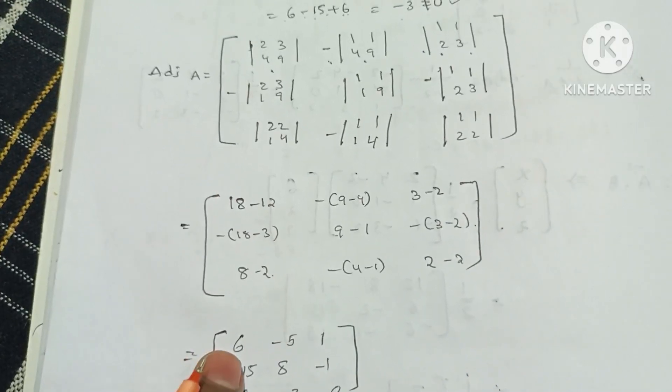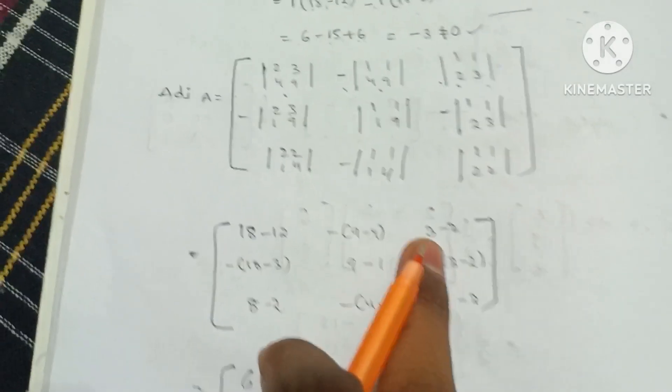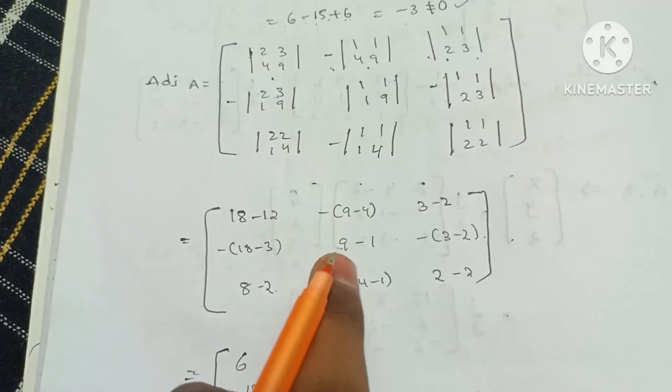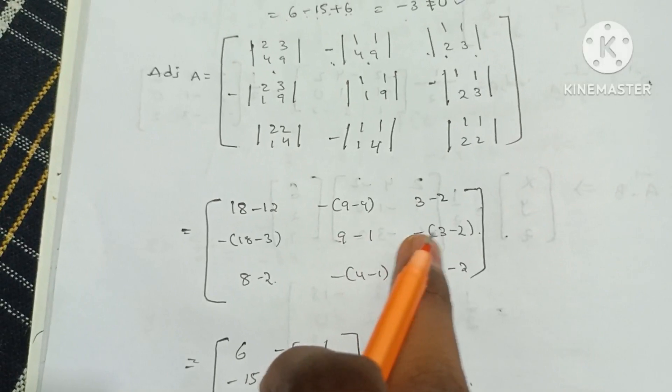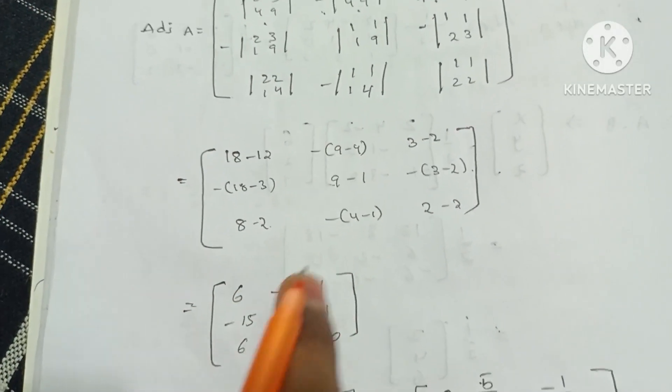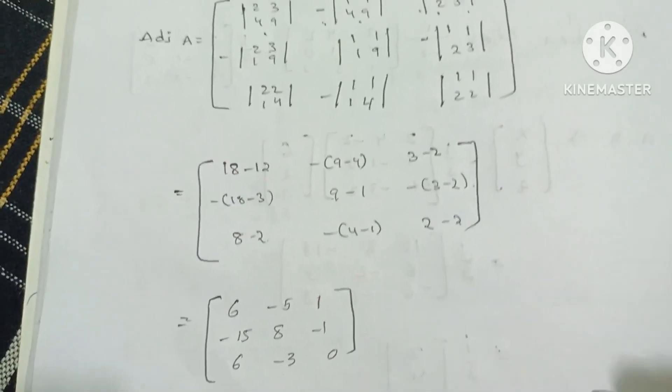Minus 1 into 6, 9 minus 4 and 5 minus minus 5, 3 minus 2 and 1, minus 18 minus 3 and minus 15, 9 minus 1 and 8 minus 3, minus 2 and 1 minus 1, 8 minus 2 is 6 minus 4 minus 1 and 3 minus 3, 2 minus 2 is 0.